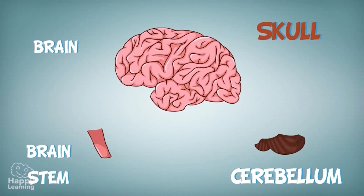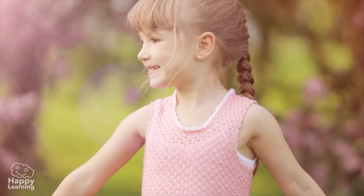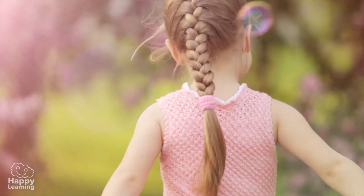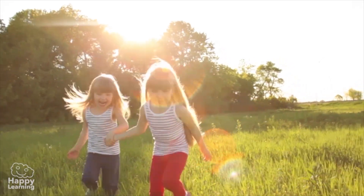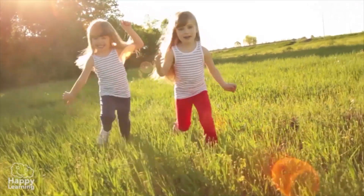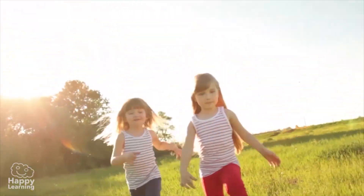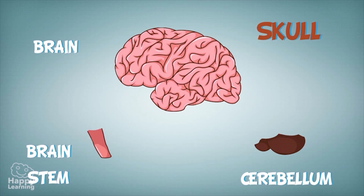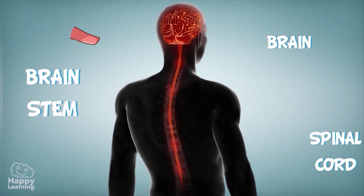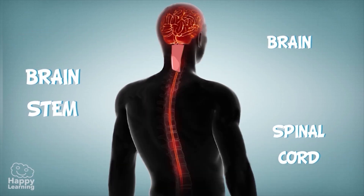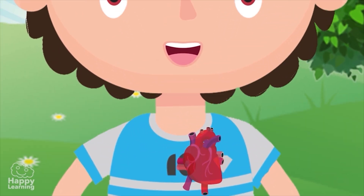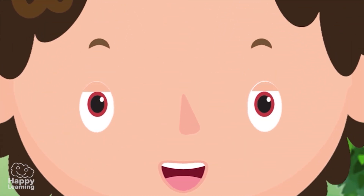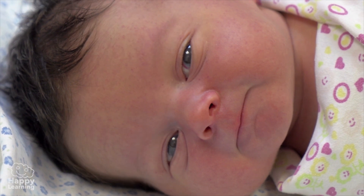The cerebellum coordinates our balance as well as our movements. It is because of the cerebellum that we are not constantly falling down — thank you, cerebellum! The brain stem links the brain to the spinal cord and controls the automatic actions, such as our heartbeat or the blinking of our eye, which happens without us even realizing it.